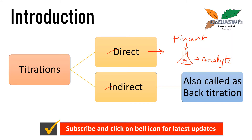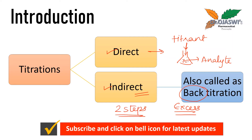Indirect titration, which is also called back titration, involves adding excess reagent to the analyte. The excess amount that was added is then determined, and with the help of that excess amount we calculate the percentage or concentration of analyte present in the conical flask. This is an indirect determination of the analyte.